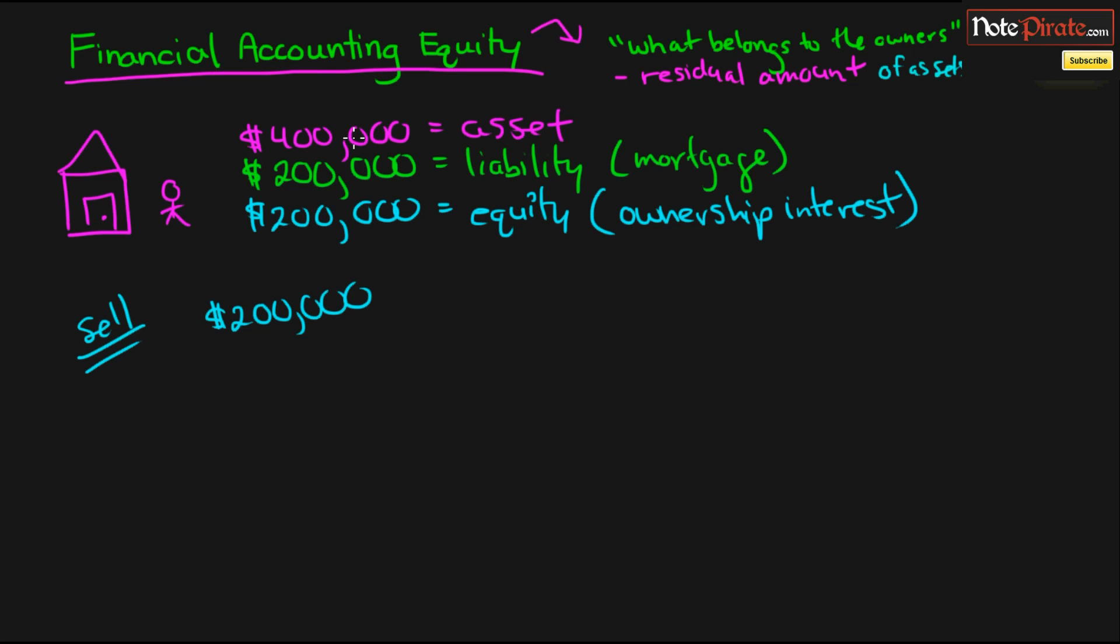And if the - let's say the housing market starts performing well and it goes up, maybe my house is now worth $500,000. Well, because the mortgage is still the same, since it's $200,000, we just subtract that, and my equity will be worth $300,000. And that is the value that I will receive for selling my house. So that's how equity can fluctuate, and that is essentially what equity is.